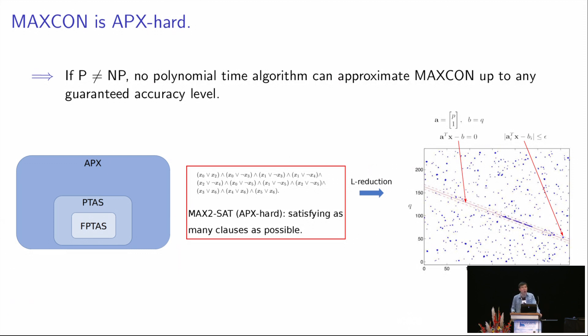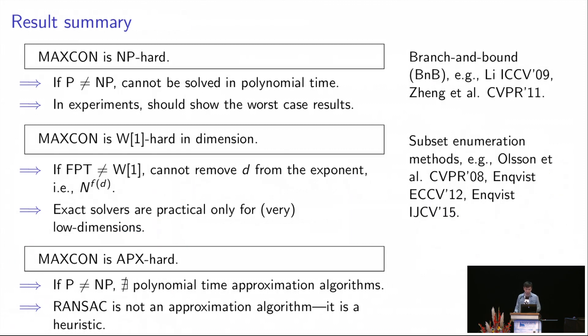However, we also show that this is not likely to be true. We actually prove that MAXCON is APX-hard, meaning that if P is not NP, then no polynomial time algorithm can solve MAXCON up to any guaranteed accuracy level. So this is done by performing L-reductions from the MAX2SAT problem to the MAXCON problem. And since MAX2SAT problem is APX-hard, we know that MAXCON is also APX-hard. So if you feel sleepy before, just remember this page and the next one.